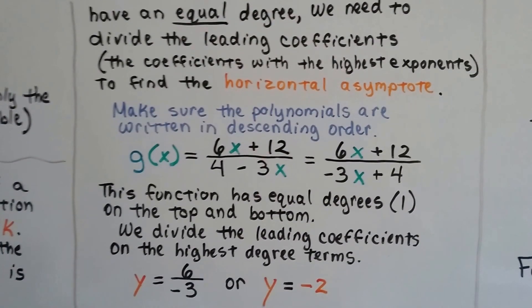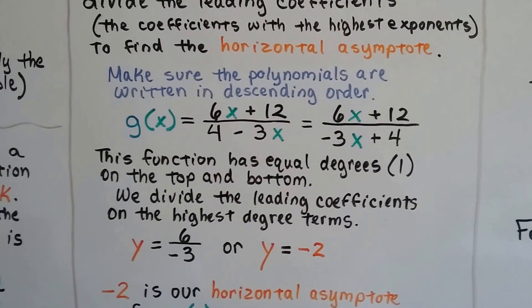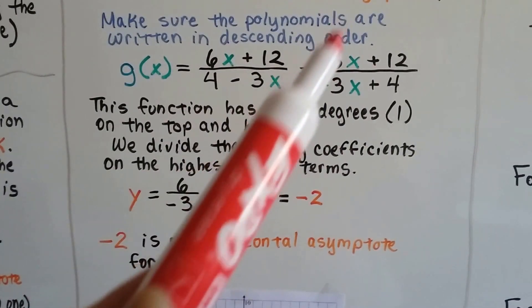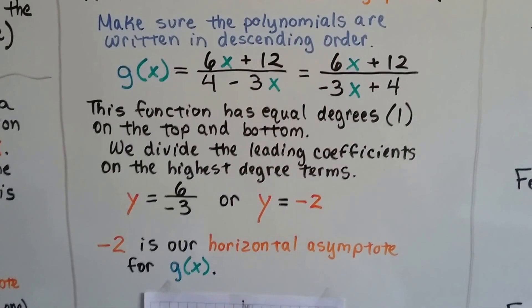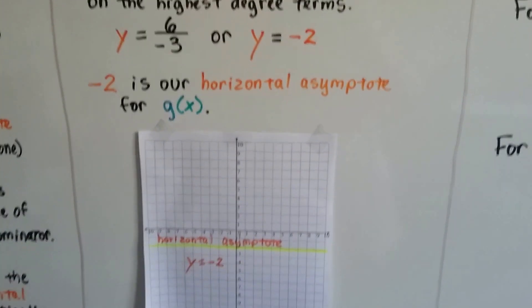This function has equal degrees, x's to the first degree, on the top and the bottom. So we just divide the leading coefficients on the highest degree terms. 6 divided by a negative 3, y equals negative 2. Negative 2 is our horizontal asymptote for g(x).